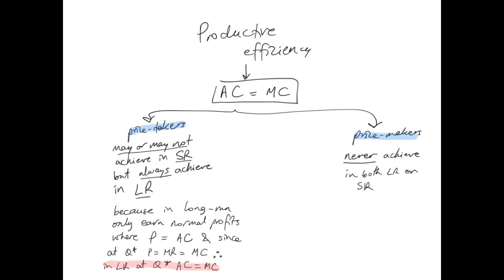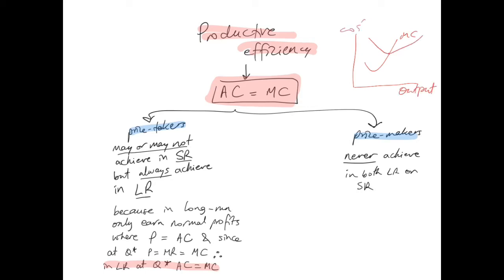What about productive efficiency? The condition for productive efficiency is AC equals MC — this is the level where average cost is minimized. On a diagram with output on the x-axis and cost on the y-axis, you draw the marginal cost curve and the average cost curve. The level of output where MC equals AC is the minimum average cost point — that is where the firm is productively efficient.